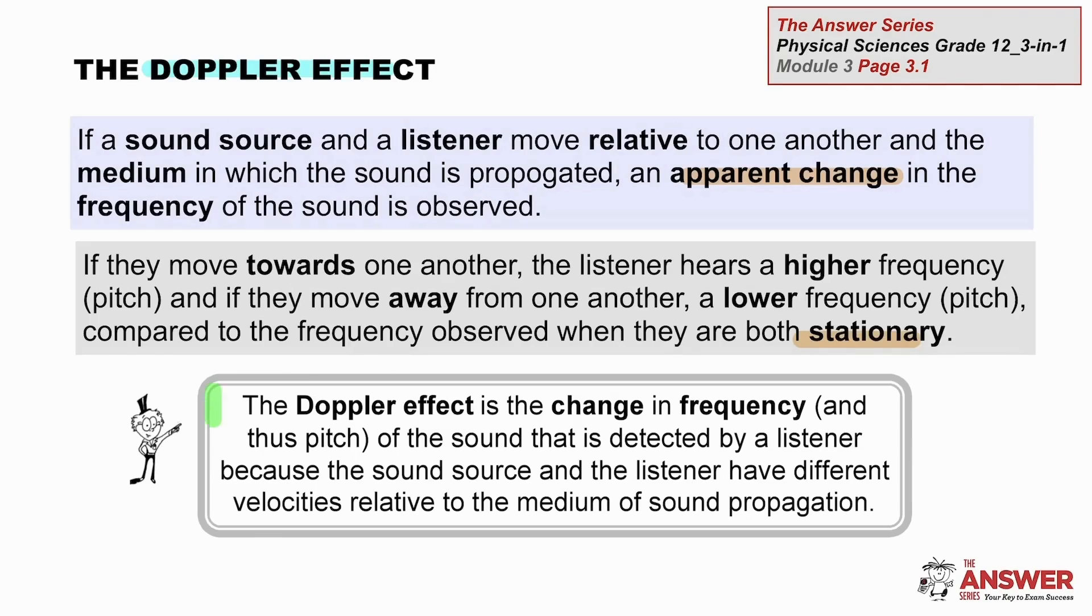Here is the formal definition of the Doppler effect. You can be asked to write it down in a test or exam. The Doppler effect is the change in frequency of the sound detected by a listener because the sound source and the listener have different velocities relative to the medium of sound propagation.